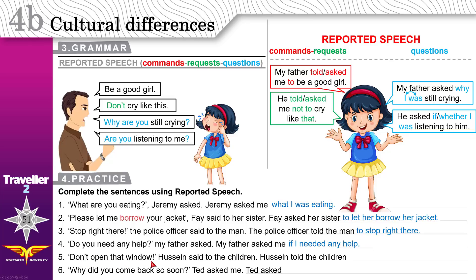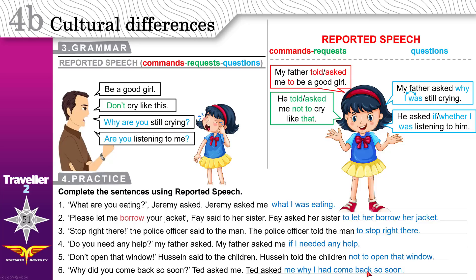Don't open that window. This is a request. Hussein told the children not to open that window. Why did you come back so soon? Ted asked me why — but don't use 'did you come back' in past simple. Use past perfect and do not write a question mark — it's not a question. Ted asked me why I had come back so soon.